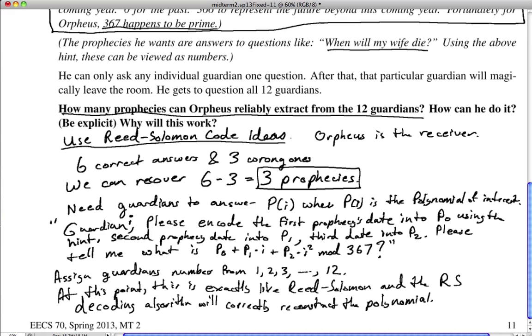So, let's see, have we answered the question? How many prophecies can Orpheus reliably extract from the 12 guardians? Yes, we've answered that part. The answer is three. If we could use Reed-Solomon ideas. How can he do it? He can do it by asking questions of this form, which forces guardian I to return a polynomial evaluation. The honest ones will answer correctly, the dishonest ones will lie maliciously, but that's exactly the scenario that Reed-Solomon codes are meant to handle. Why will this work? This works since Reed-Solomon works. Now you don't have to prove on the midterm or in the homework why Reed-Solomon works. That's already in the notes. In general, we're not going to ask you to do something that's exactly like the notes. Just regurgitate something from the notes. So this is actually a good enough answer and gives you full credit on this question.